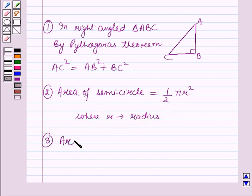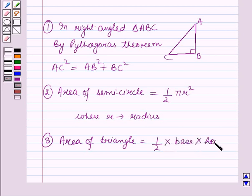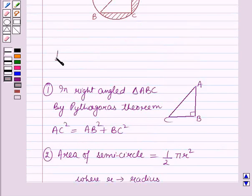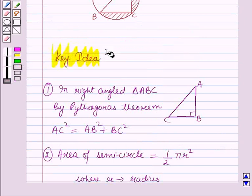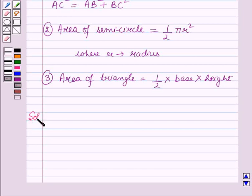Thirdly, the area of a triangle is equal to one-half into base into height — or equivalently, one-half into base into altitude, or one-half into base into perpendicular. Now these results will work out as key ideas for solving this question, and we will start with the solution.